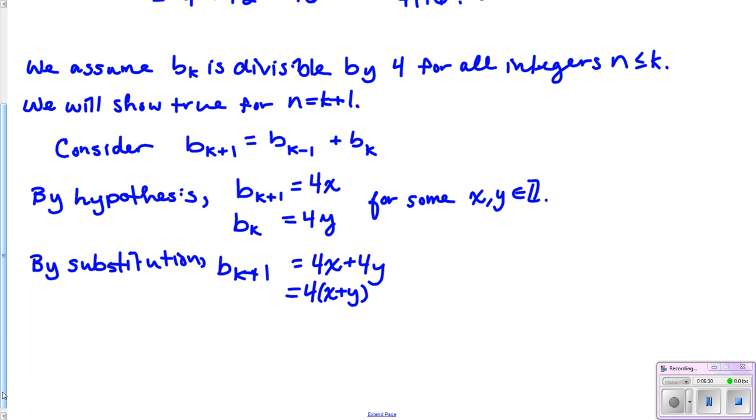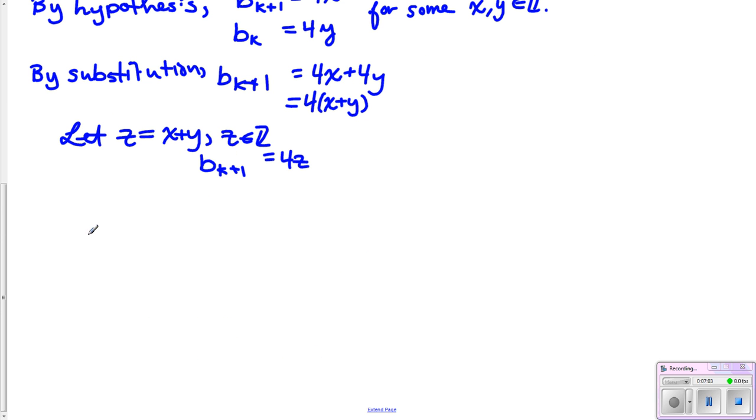Now, since we've factored that out, and we're trying to show that B_{k+1} is divisible by 4, let some other integer, let's maybe call it z, so let z equal x plus y, which because the sum of integers is also integers, in other words, the integers are closed under addition, we know that z is also an integer. So, again, by substitution, we know that B_{k+1} is equal to 4 times z, which, of course, is the definition of divisible by 4. Therefore, what can we say about this? Therefore, 4 divides B_{k+1}, which is what we were trying to show.